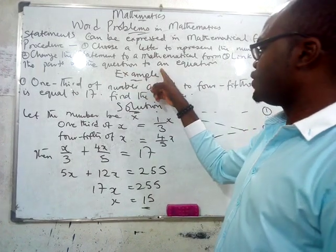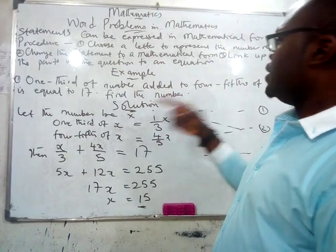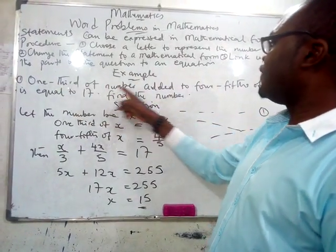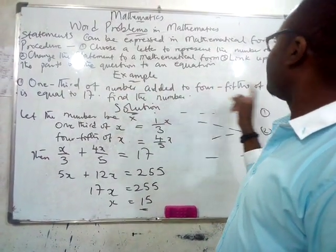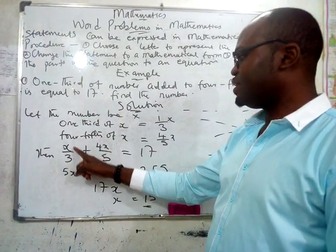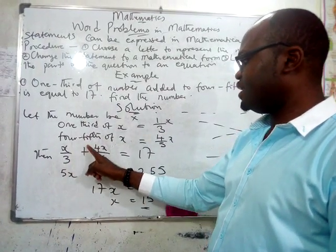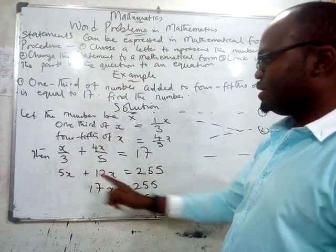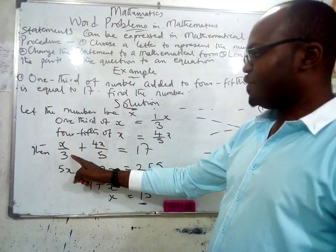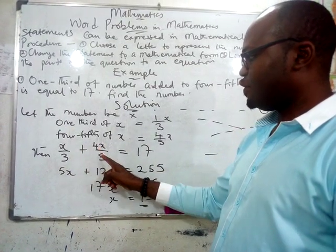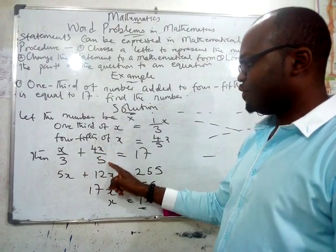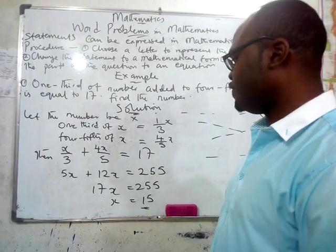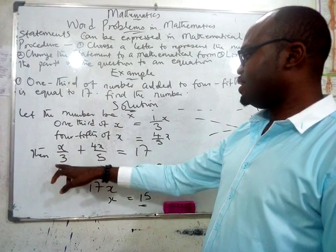Linking up: one third of the number added to four fifths of the number equals 17. So the equation is: x/3 + 4x/5 = 17.